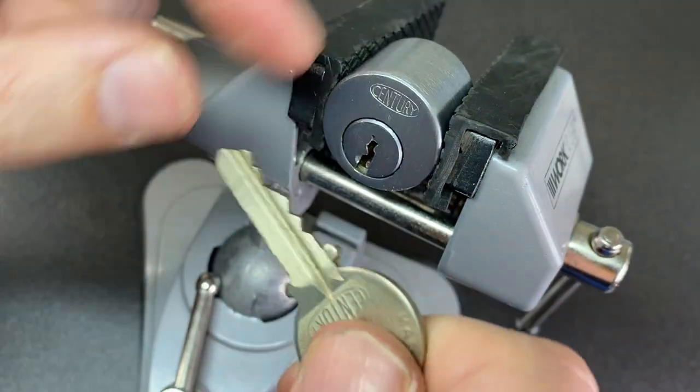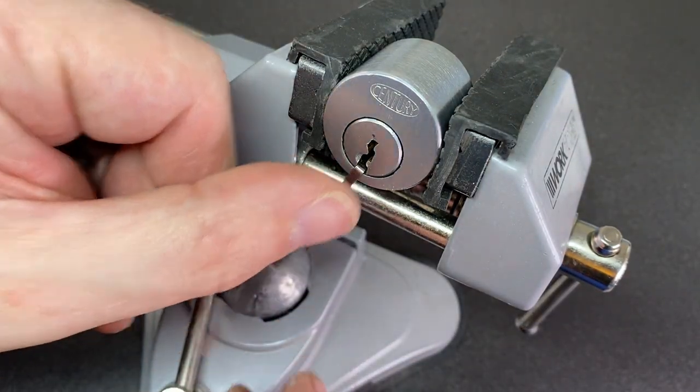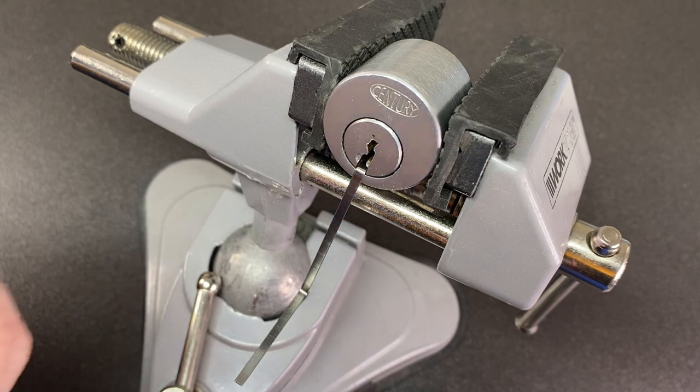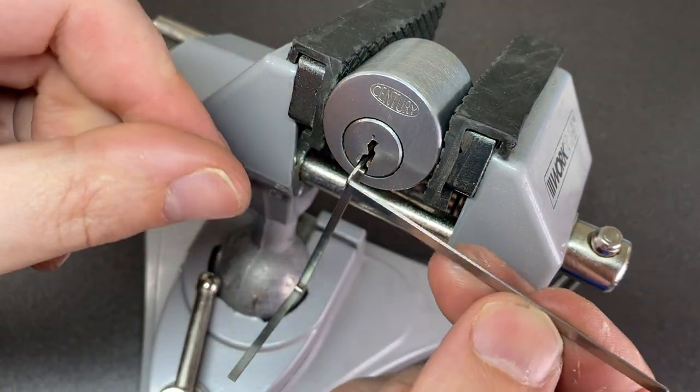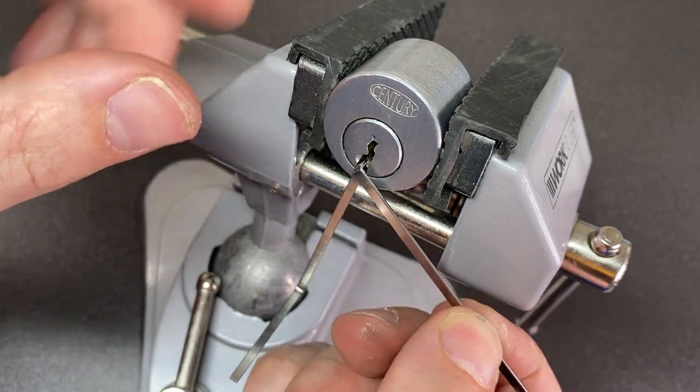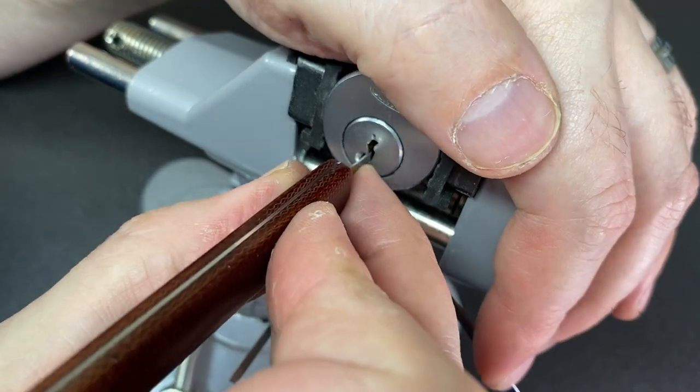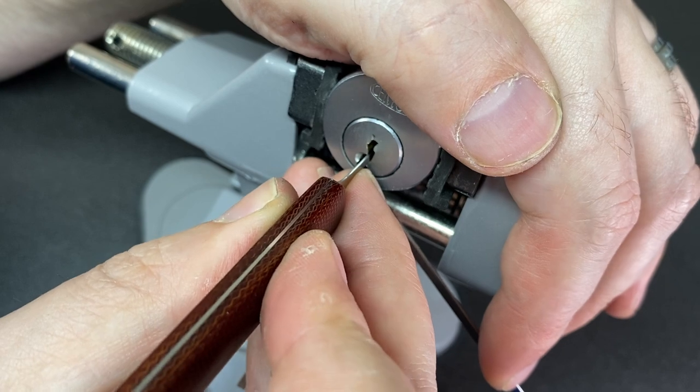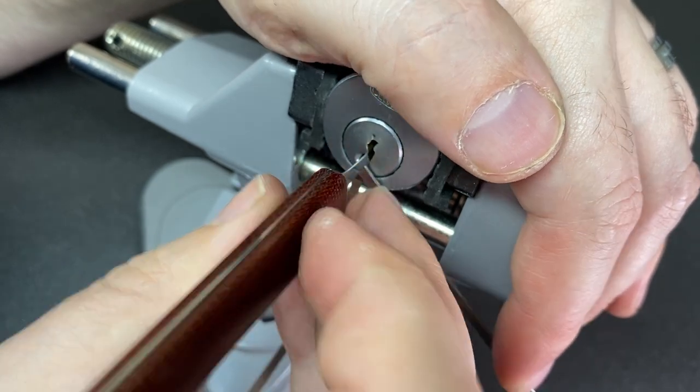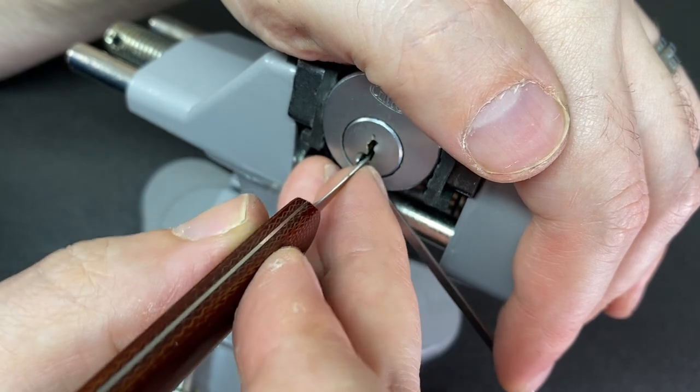I'm going to put a little bit of metal at the bottom here just to sort of get over this step in the keyway, which is a bit frustrating, and then apply bottom of keyway tension like this. Then use sort of a short hook to go in and try to find the first binding pin, which I think is pin five. Make sure I've got some tension. I've got that, I think. So I'm just going to go back through.